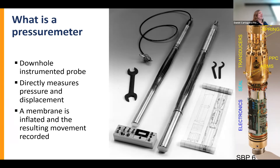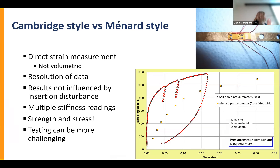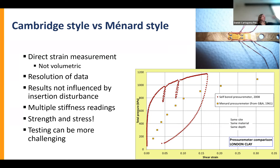The difference between Cambridge-style and Ménard-style pressuremeters is the strain gauges. The arms are about the size of your little finger and they're Wheatstone bridge circuits, recording with very high precision a voltage that occurs across the arm movement. We have a resolution of about 0.1 microns displacement and about 0.1 kPa pressure.